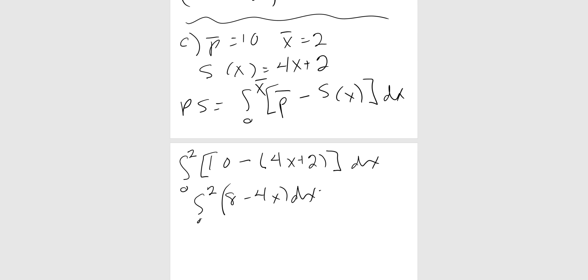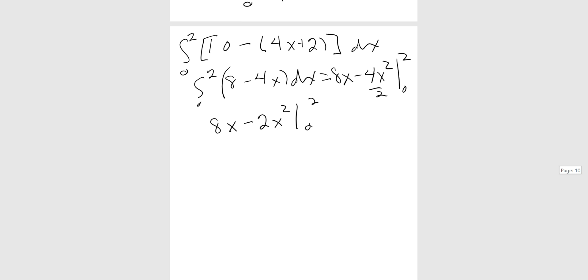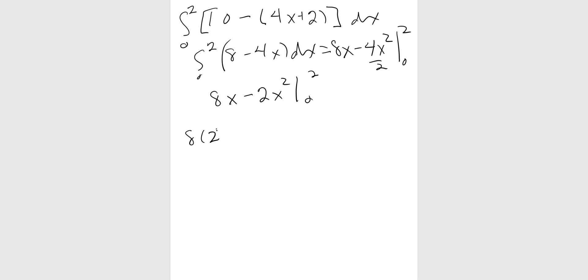Before I integrate, I'm going to make this 0 to 2, 10 minus 2 gives me 8 minus 4x dx. Integrating, the 8's going to get an x, the 4 gets an x squared over 2, 0 and 2. I like to simplify, so I'm going to say this is 8x minus 2x squared, 0 and 2. I have 8 times 2 minus 2 times 2 squared, and when I plug in this 0, I'm just getting 0. You can do this in your head or calculator. 8 times 2 is 16, 2 times 2 squared is 8, 16 minus 8 is 8, so this is my producer surplus.